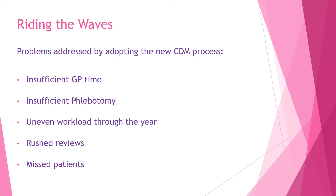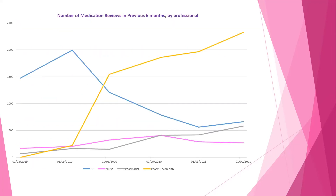This graph — a run chart — shows who's doing the reviews. The blue line is our doctors, and before we went live it was mostly them. The yellow line is our pharmacy technician, who went from seeing no one to seeing everyone. The pink line at the bottom — the nurses — stayed fairly flat; they were always involved, particularly around diabetes and respiratory. The grey line for pharmacy has just grown and grown at a steady and controllable rate. The summary is: on the left, fairly happy doctors; on the right, much happier doctors.